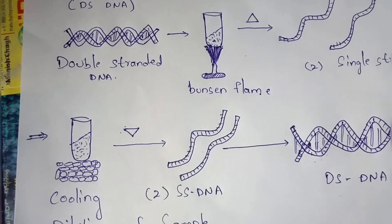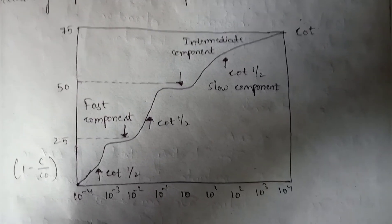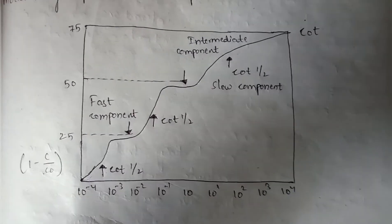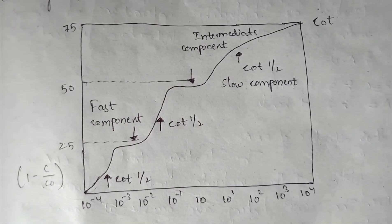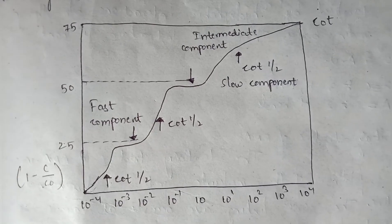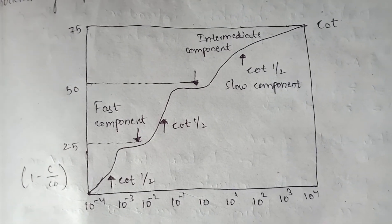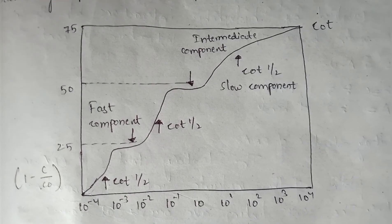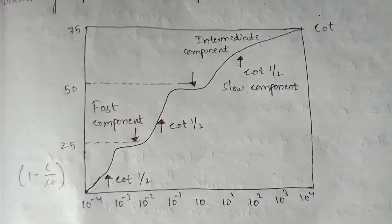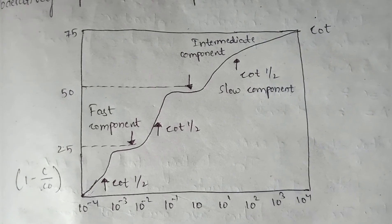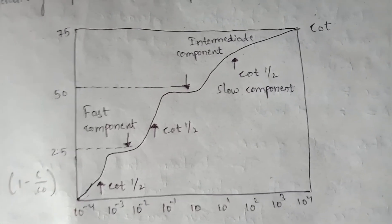This question will be asked after four months in your degree examinations. Here is the graph obtained when you plot the measurements of both single-stranded and double-stranded DNA using the spectrophotometer. Thank you for watching. If you like this video, please like and subscribe, and if you have any doubts, please comment in the comment box.